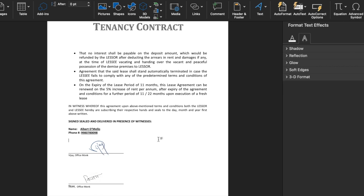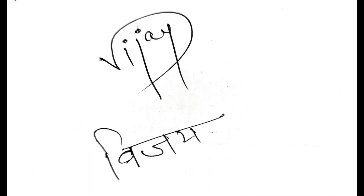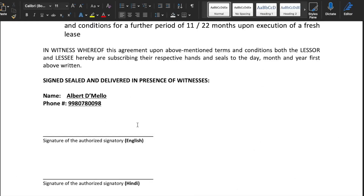Now we will see how our digital signature can be created. First of all we will have to sign in our preferred language on a white paper. Once the signature is done we will have to click a picture of it or scan it with our mobile app scanner. Just keep in mind that the picture or scan quality should be clear and visible.